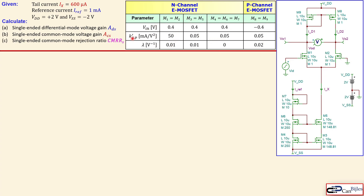The parameters for the MOSFETs are shown here: the threshold voltages, k_n or k_p depending on N or P channel, and also the lambdas for each. We also have our tail current ix = 600 µA, as discussed previously in a separate video about the cascode current source. The reference current used here is 1 mA.